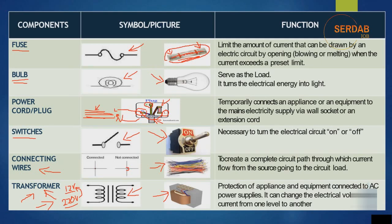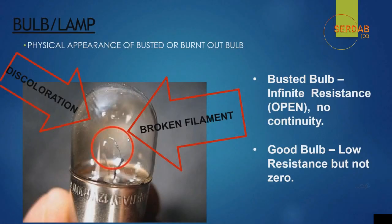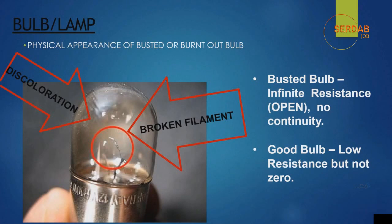These are the main components in any electric and electronic circuit. Next, you need to know how to test each of these components. Let's talk about the bulb or lamp. The physical appearance of a busted or burnt-out bulb — if it is a tungsten bulb, you can see a wire broken inside it, which means the lamp is no longer working. For other lamp types, you can simply connect it to the appropriate power supply and see if it lights up.